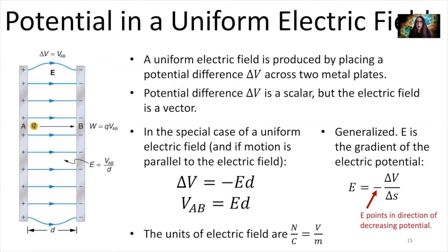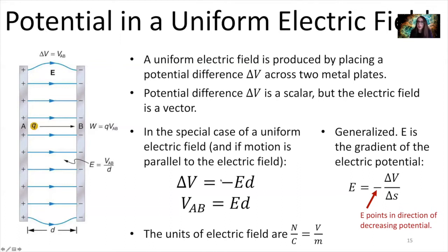The units of electric field are Newton per coulomb, but you can also write them as volt per meter. This is because our new equation gives the change in potential as equal to minus the electric field times the distance between two points where we're evaluating that potential difference. If we solve for E, it would be the change in potential over a distance — a volt per meter. So volt per meter and Newton per coulomb are equivalent units.